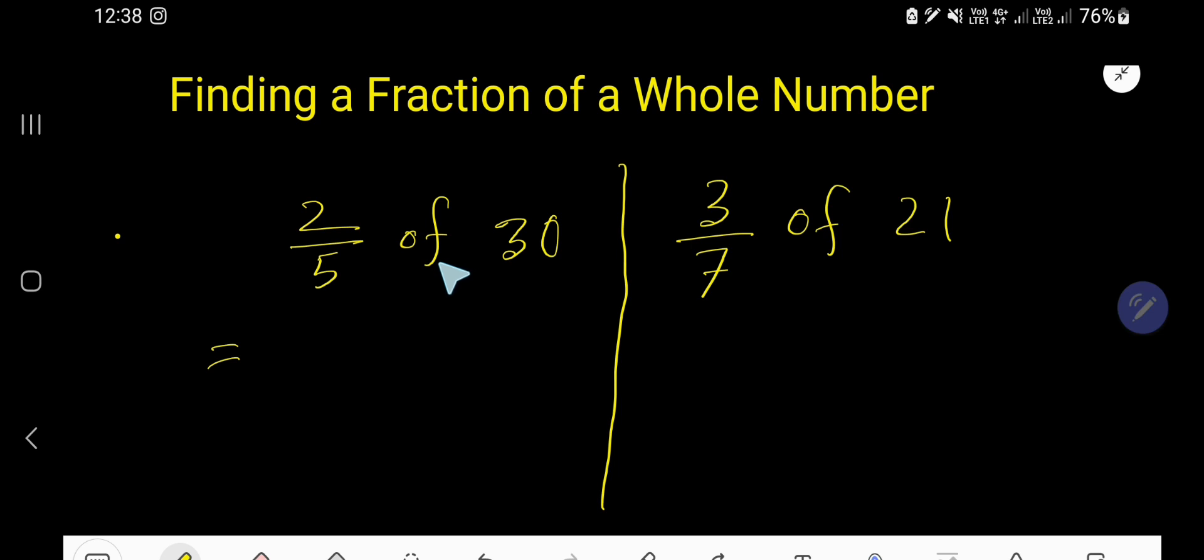The result will be lower than 30 because we are going to find out the fractional part of it. So at first you need to change this 'of' to a multiplication sign, and then 30.